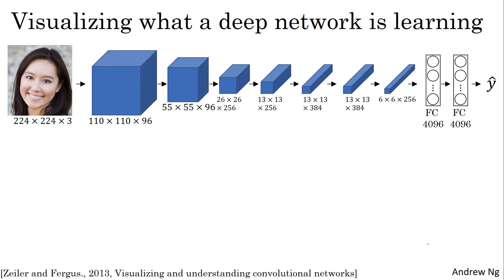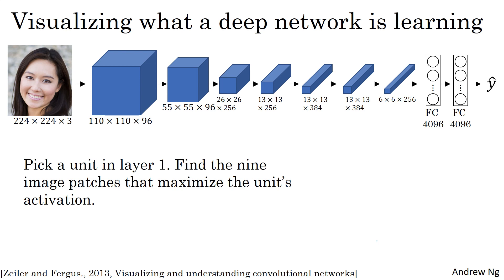Let's say you've trained a ConvNet — this is an AlexNet-like network — and you want to visualize what the hidden units in different layers are computing. Here's what you can do: start with a hidden unit in layer one, scan through your training set, and find out what images or image patches maximize that unit's activation. Pass your training set through the neural network and figure out what image maximizes that particular unit's activation.